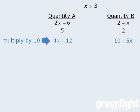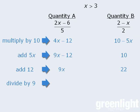From here, let's try to get the variables on one side and the non-variables on the other side. To do this, we can add 5x to both quantities to get this. Then we can add 12 to both quantities to get this. And finally, if we divide both quantities by 9, we're left with an x in quantity A, and in quantity B we're left with 22 over 9, which we can rewrite as 2 and 4 ninths.